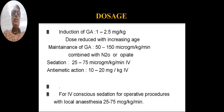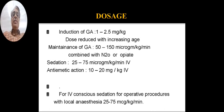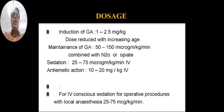Now we will see the dose. The induction dose for general anesthesia is 1 to 2.5 mg per kg. Dose is reduced with increasing age. The maintenance dose for general anesthesia is 50 to 150 mcg per kg per minute when combined with nitrous oxide or opiates. The sedation dose is 25 to 75 mcg per kg per minute IV. The antiemetic dose is 10 to 20 mg IV, which can be repeated after 5 to 10 minutes.